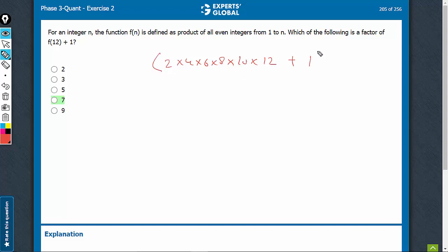We have to apply some smart way and go by elimination. See, this entire thing is a multiple of 2. So when we add 1 to it, it cannot be a multiple of 2. So 2 can be eliminated.